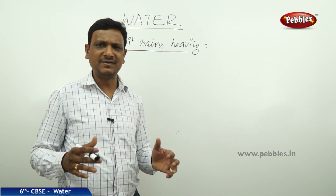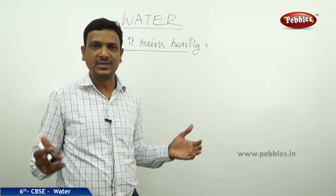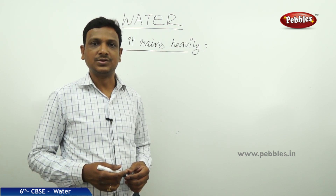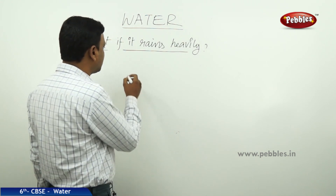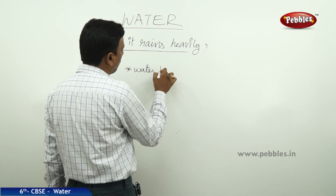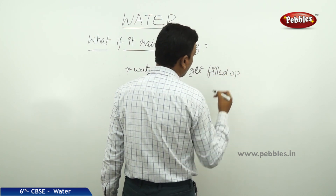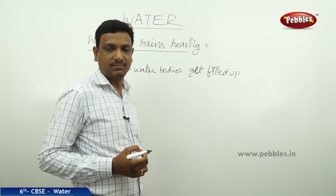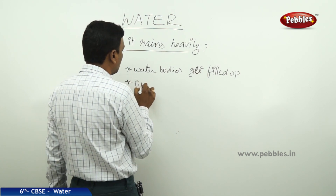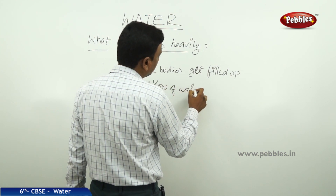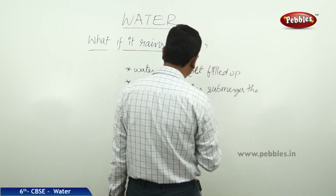But what happens if it rains heavily, suddenly, for a very long period of 7 days due to a cyclone? If there is such heavy rain, the water bodies — ponds, lakes, rivers — get filled up first, and then they overflow. The overflow of water submerges the low-lying areas.